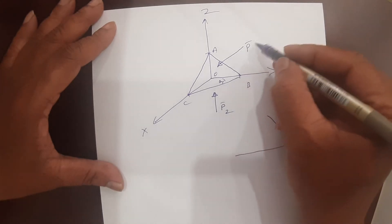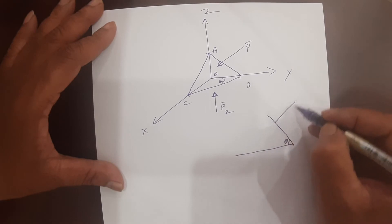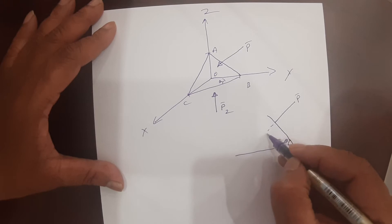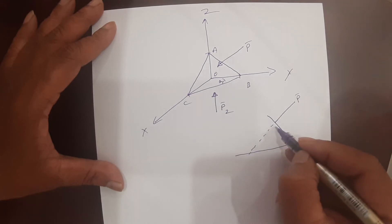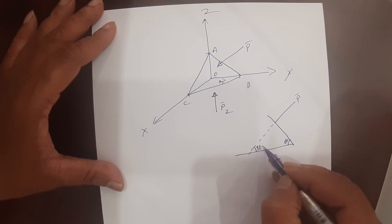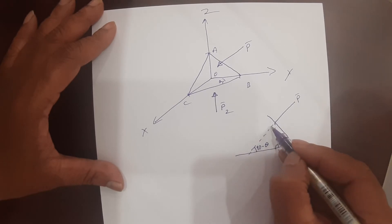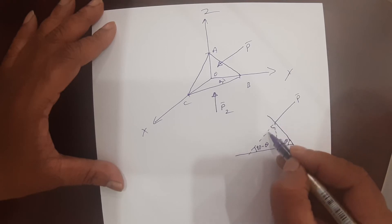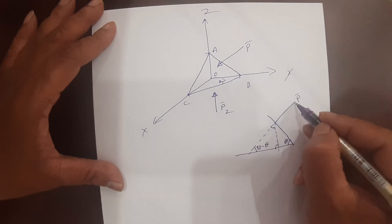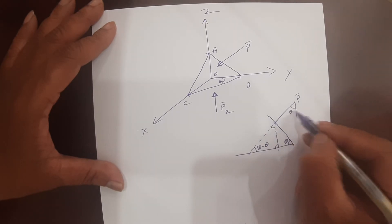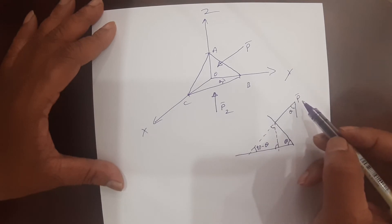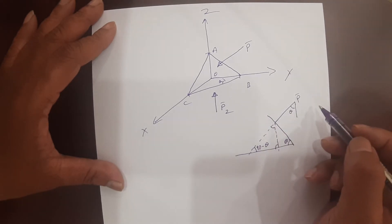Our pressure P-bar will be acting perpendicular to this plane. I will extend this — so this is 90 degrees, and this will become 90 minus theta. Drawing a vertical line, this angle becomes theta, meaning this line makes angle theta with the vertical. I am doing this because I want to resolve P-bar into the vertical direction and horizontal direction.